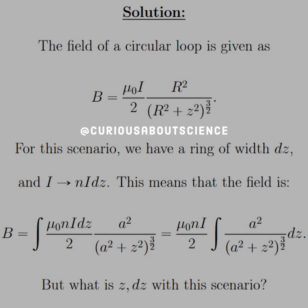So when we plug this in, that means we need to integrate out this magnetic field with respect to DZ. We plug all these modifications in and end up with B equals mu not n I divided by 2, the integral of A squared divided by A squared plus Z squared to 3 halves times DZ. But for this geometry where we're given thetas, what is Z and DZ?